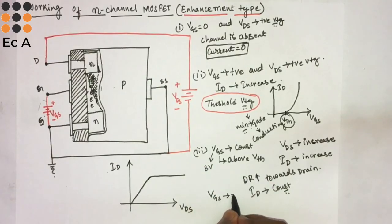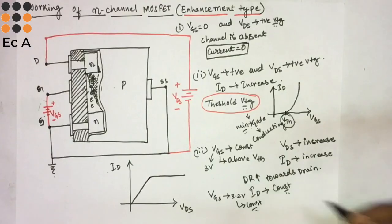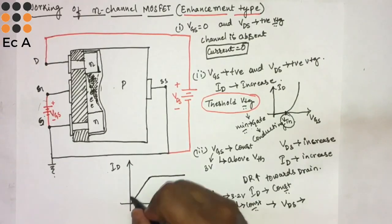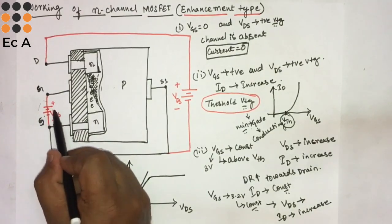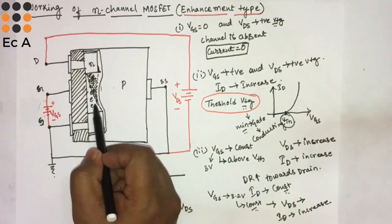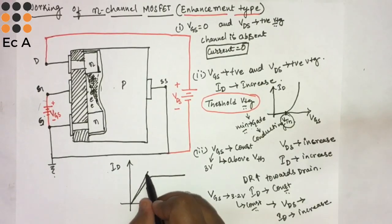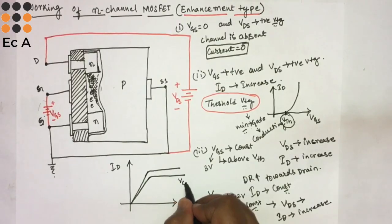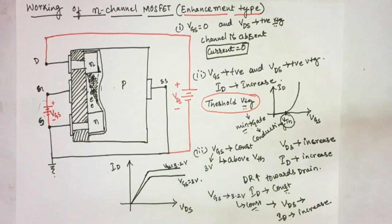If VGS is increased, for example from 3 volts to 3.2 volts and kept constant, then as we increase VDS the drain current will also increase to a higher level. This is because increased gate voltage accumulates more electrons, increasing the current. So we get a different current curve: one for VGS equal to 3 volts and another for VGS equal to 3.2 volts. Hope you have understood the topic, thank you.